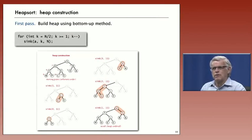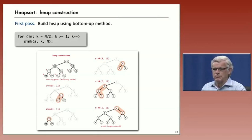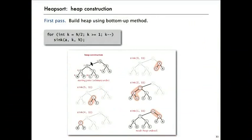This slide summarizes the code for heap construction, and as you can see it's a one-liner. We go backwards through the heap starting at N over two, because the rightmost half of the array is just little heaps of size one. We go backwards doing a sink starting at K. These diagrams summarize the sink calls from the demo starting at positions five, four, three, two, one. As you can see, only five exchanges are needed to bring this into heap ordering.